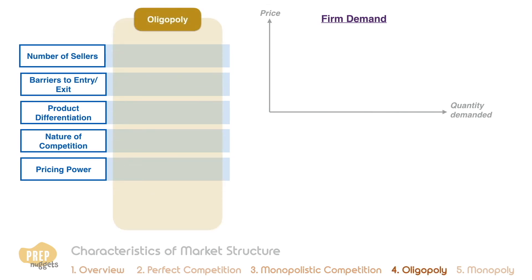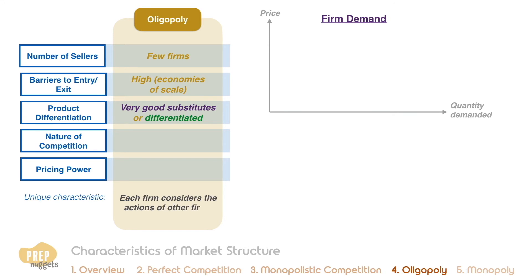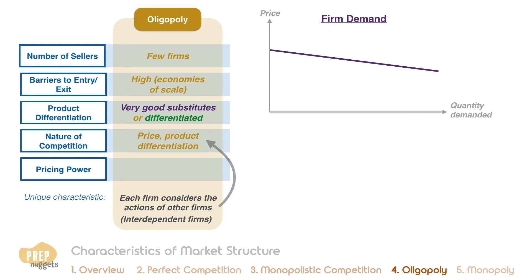The most important characteristic of an oligopoly market is that there are only a few firms competing. Barriers to entry are high, often because economies of scale in production or marketing lead to very large firms. While products are typically good substitutes for each other, they may be either quite similar or differentiated through features, branding, marketing, and quality. One unique characteristic of an oligopoly is that each firm must consider the strategies and actions of other firms in setting its own price and differentiation strategy — we say that such firms are interdependent. Demand is also downward sloping but can vary in elasticity; firms with more differentiated products tend to have more elastic demand than firms with less differentiation.